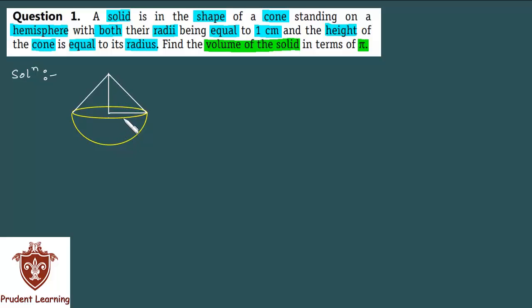The cone and the hemisphere both have the same radius equal to 1 cm. The height of the cone is equal to its radius. This means the height is also 1 cm. And with this information, you will find the whole solid volume in terms of π.